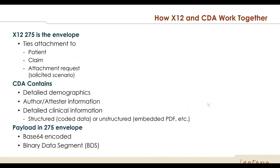To explain how X12 and CDA work together: think of the X12 275 transaction as an envelope — it ties the attachment to the patient and the claim, like address information on an envelope, and can also link to the attachment request in a solicited scenario. Inside that envelope is the CDA document, which contains detailed patient demographics, author and attester information, what kind of document it is, and all the detailed clinical information — either structured, fully coded data, or unstructured data such as a PDF. CDA is the payload in a 275 envelope — it is Base64 encoded and included in the binary data segment.